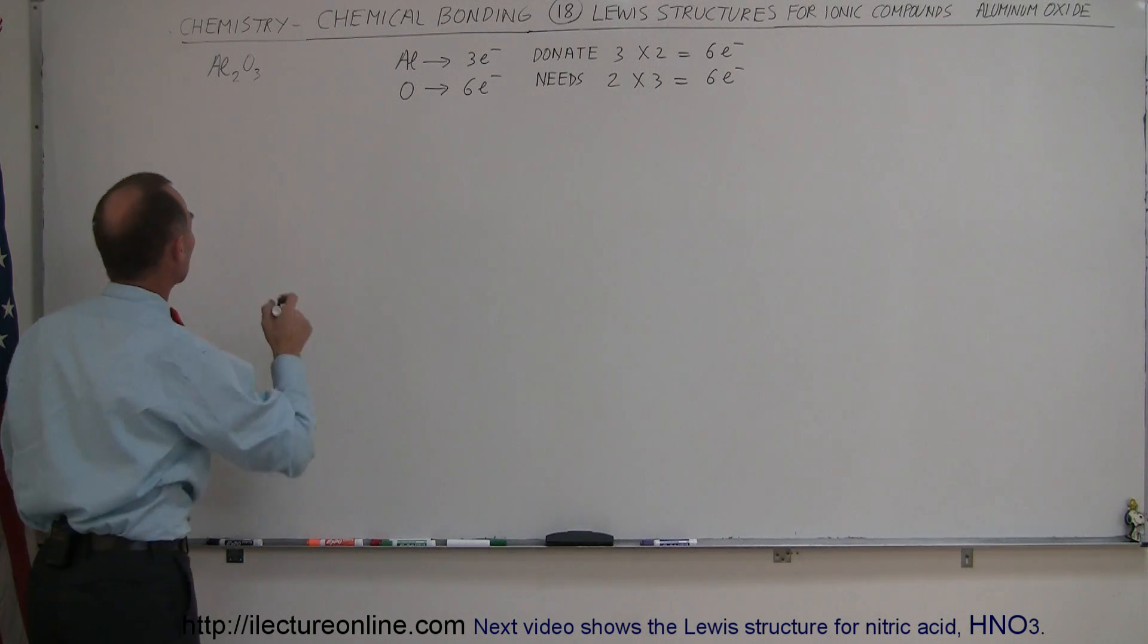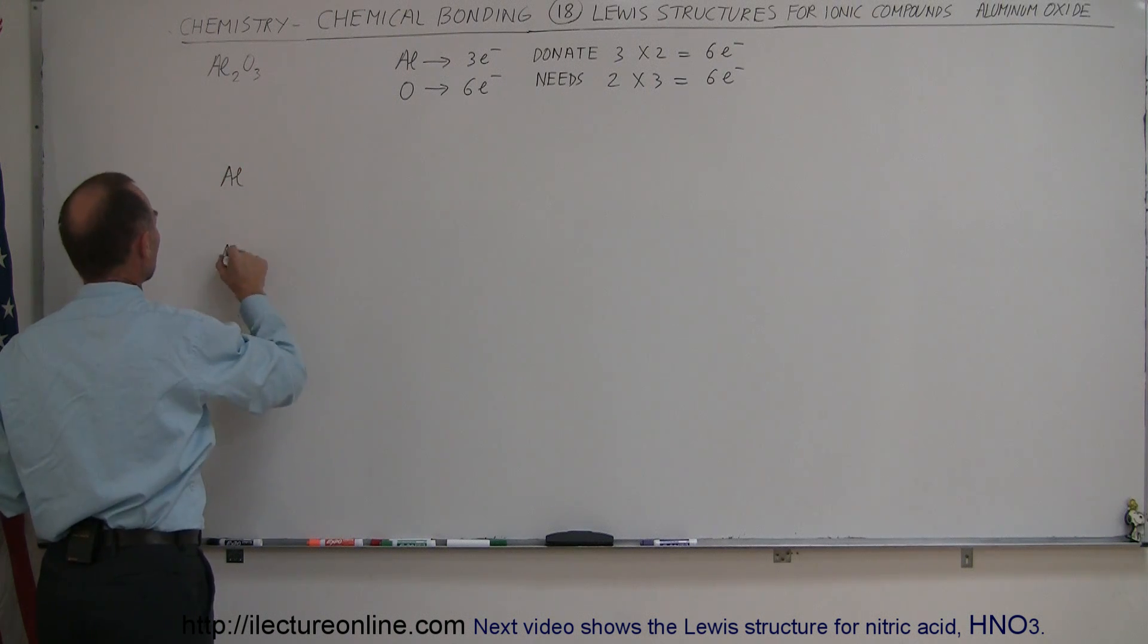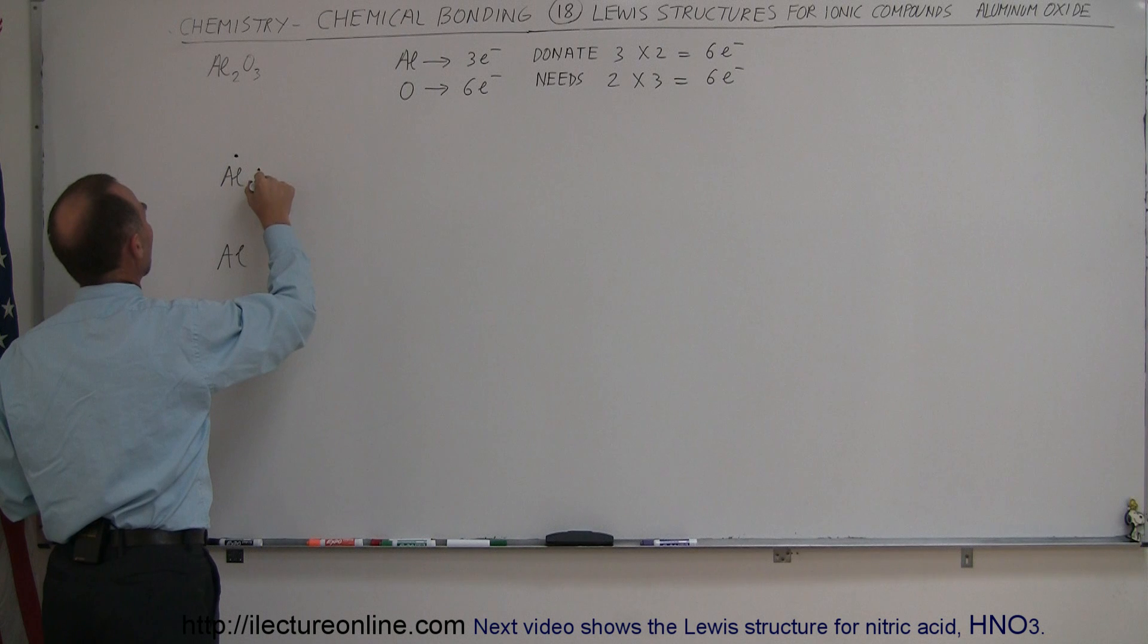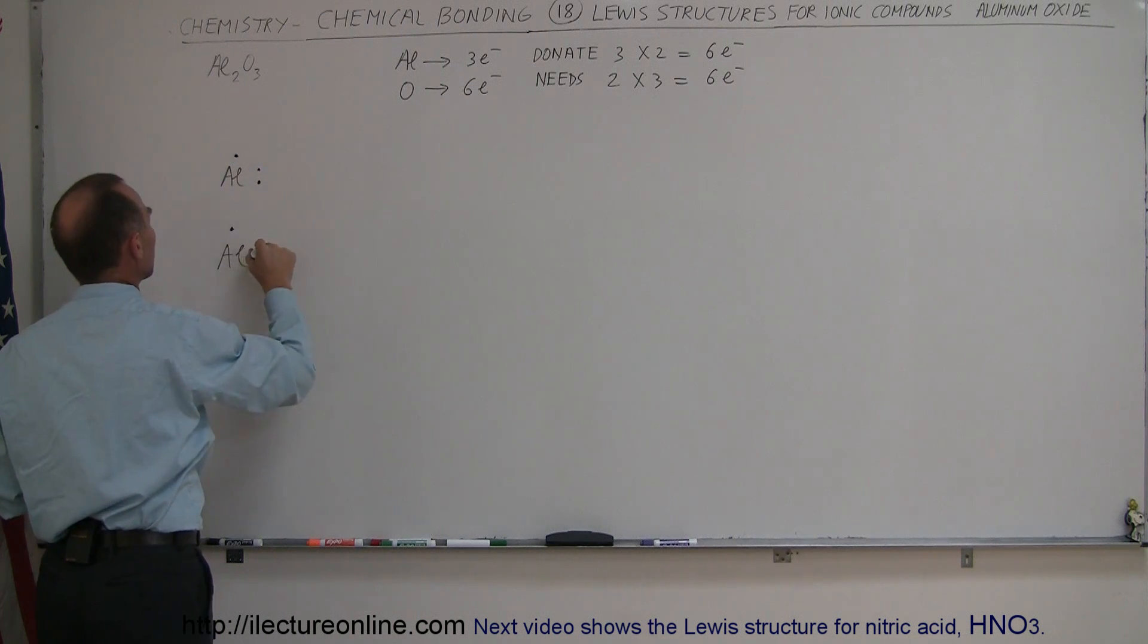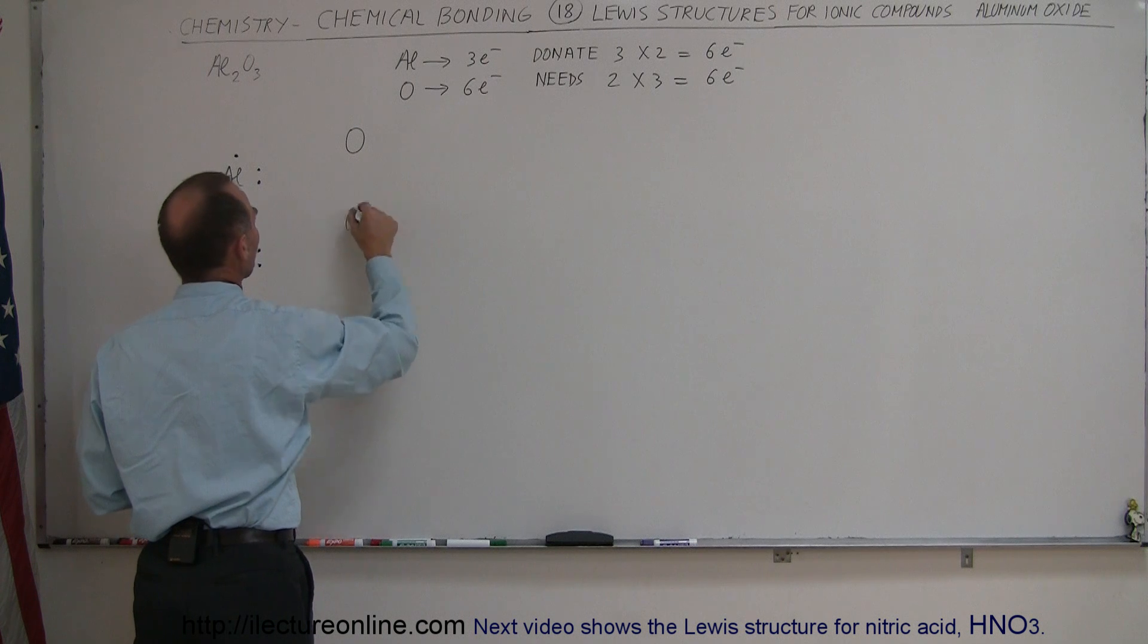So what that looks like is as follows. We have three - I should say we have two aluminum atoms - and notice that this aluminum has three valence electrons, this aluminum has three valence electrons and here we have three oxygen atoms.